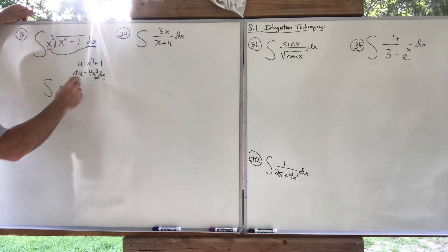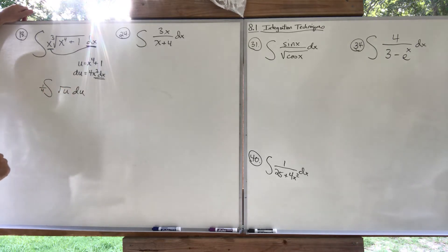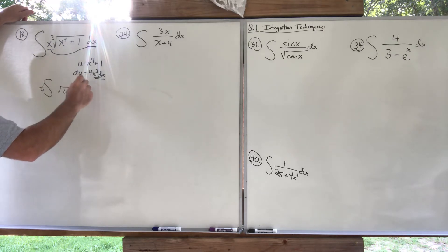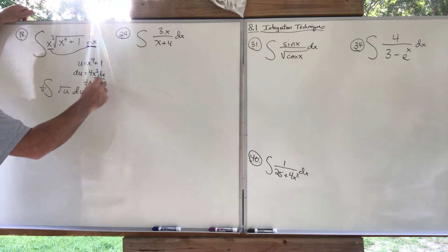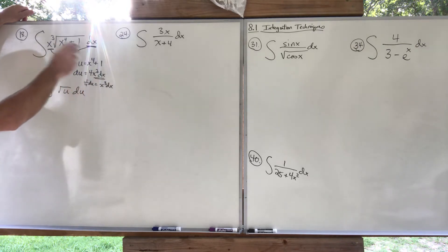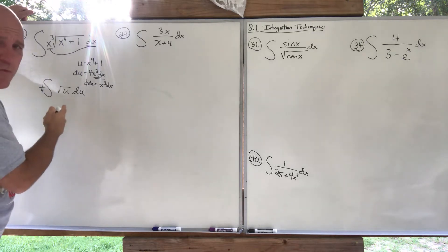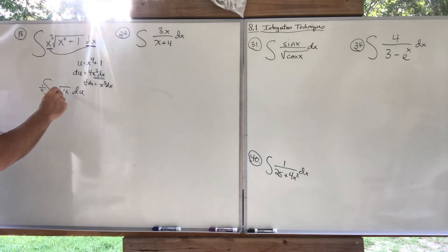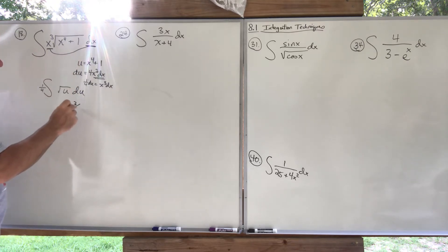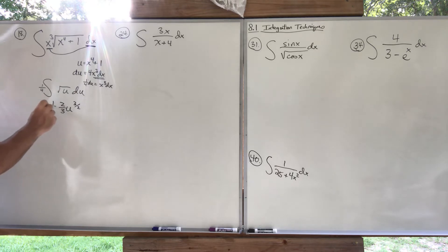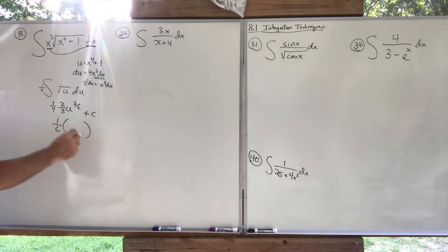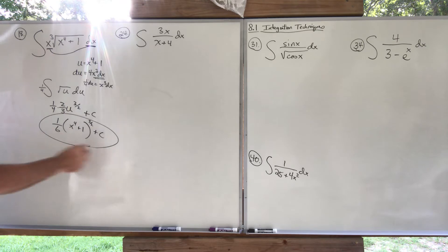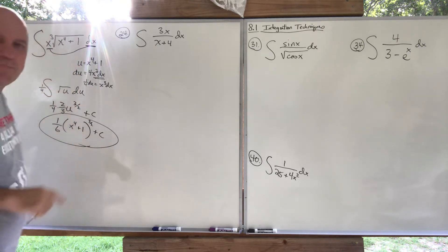I replace x³ dx with (1/4) du. Substituting in leaves an easy integral — just the power rule: u to the 1/2, add 1 to get u to the 3/2, multiply by 2/3, then by the 1/4 out front, plus C. Cleaning that up gives (1/6)(x⁴ + 1)^(3/2) + C. That's u-substitution followed by a power rule.